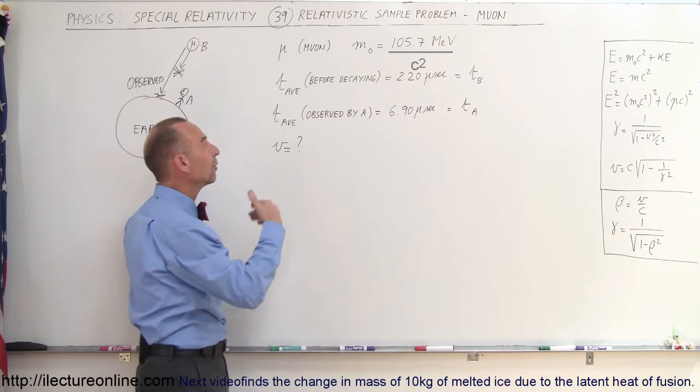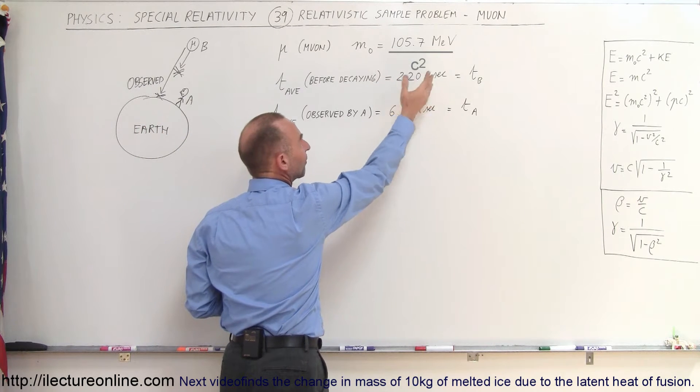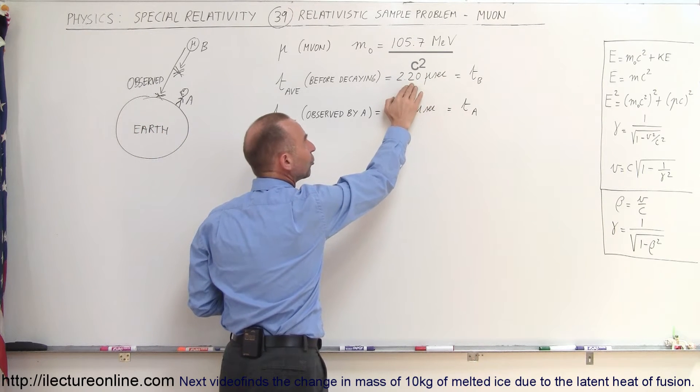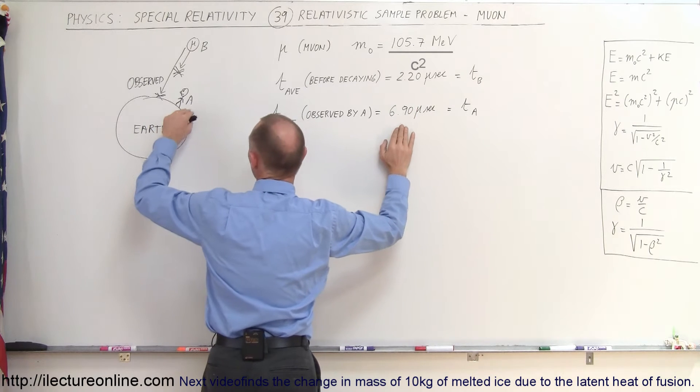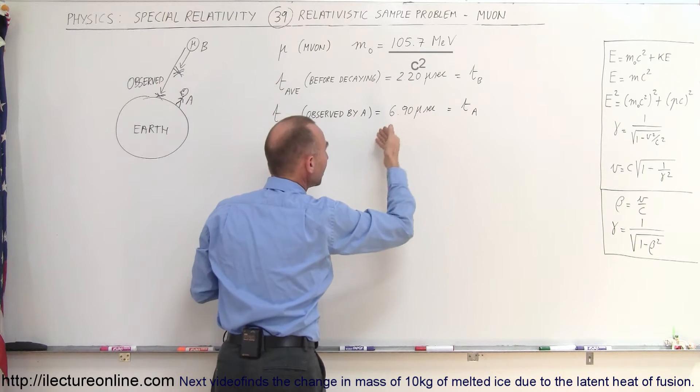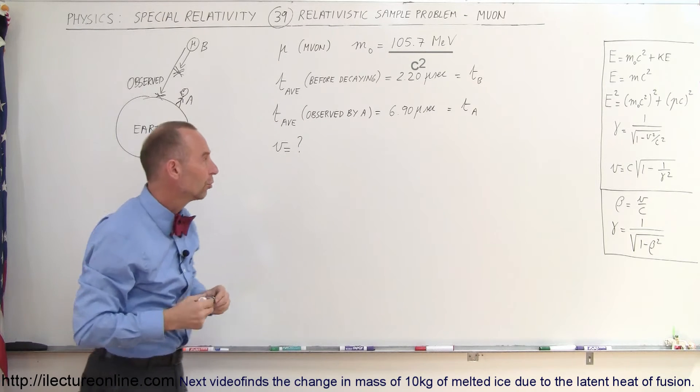That's because in the reference frame of the muon, that's traveling at very high speeds, time will be 2.2 microseconds. And for the observer on the Earth looking at them moving at very high speeds, the time will be much greater.